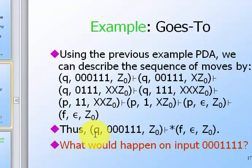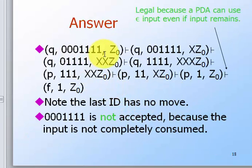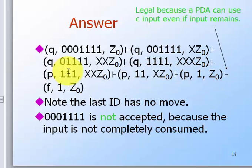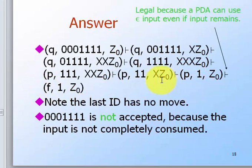What if the input was three zeros and four ones? Looking at the instantaneous description: we push X for each zero (three times), then pop X for each one (three times), but we're still left with one remaining input symbol '1' and Z-naught. Since we're supposed to be left with epsilon and Z-naught for acceptance, this is not accepted because the input is not completely consumed.